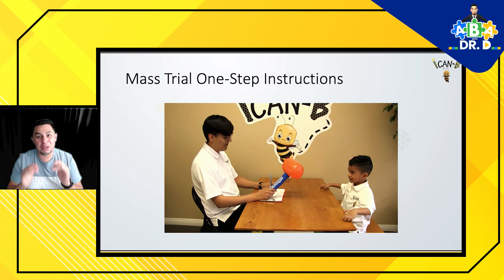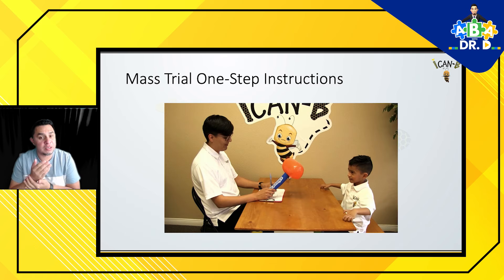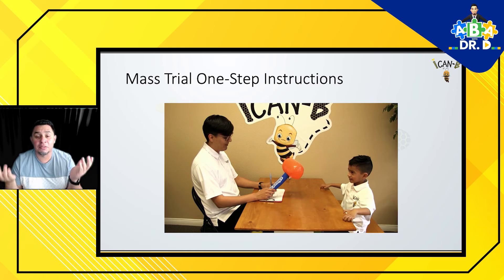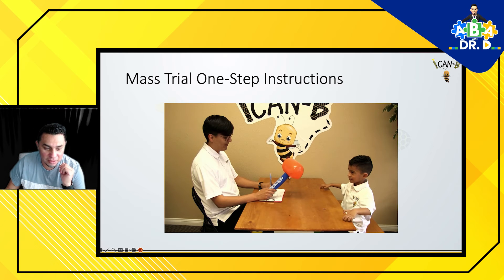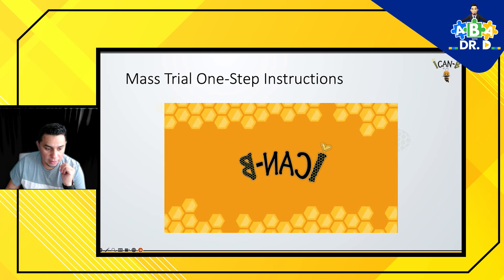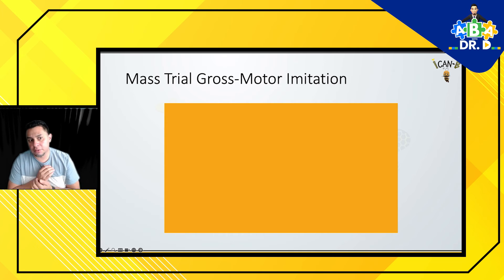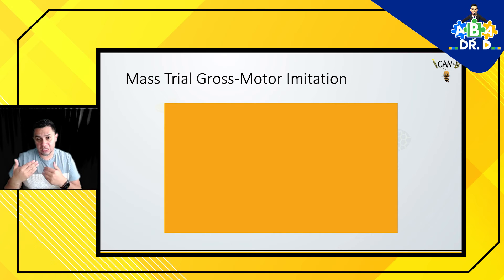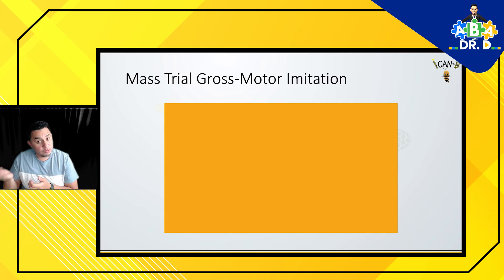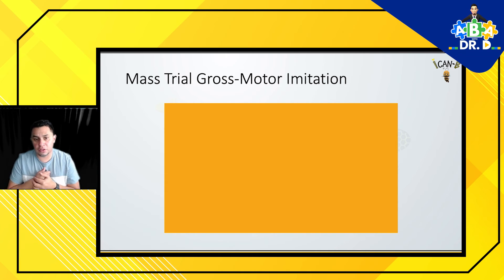Your supervisor should not recommend only a mass trial — that's absolutely not what we want to see. This is only required for specific learners that need a bit more practice with these programs. Practice and repetition does work. You can use mass trial with a variety of programs — listening or responding programs where you're expecting a motor response or following instructions from the learner, and also for vocal verbal responses such as intraverbal programs.